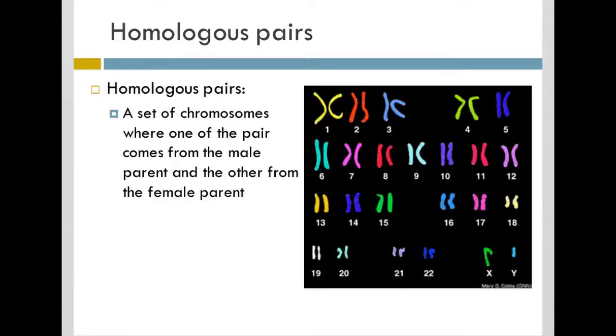And so we call these pairs homologous pairs, and we should be able to recognize that homo prefix meaning the same. Homologous pairs are a set of chromosomes where one pair comes from the male parent, and the other pair comes from the female parent.